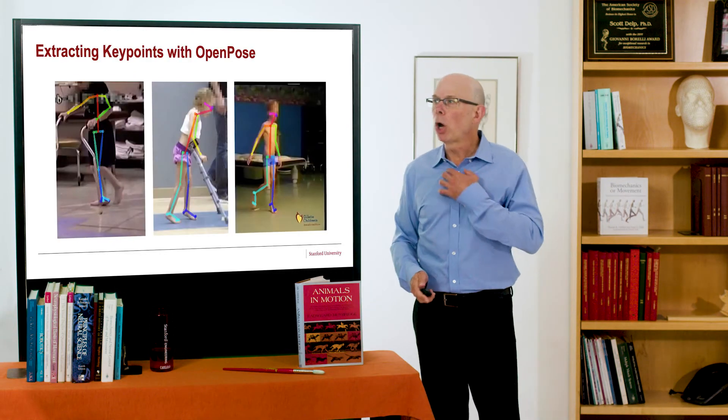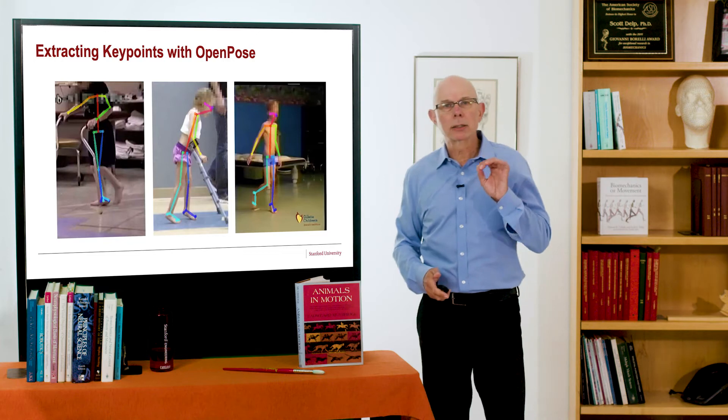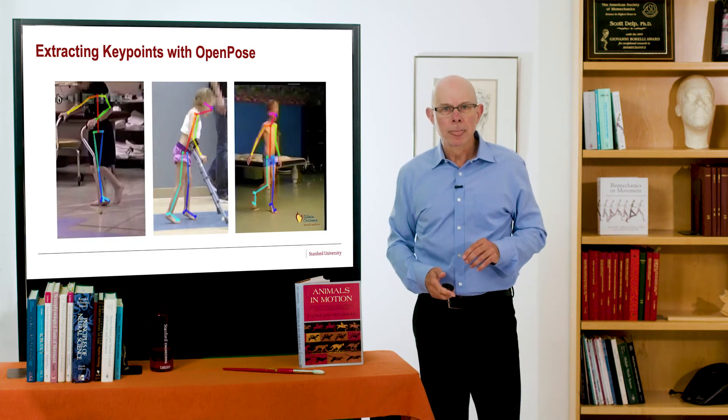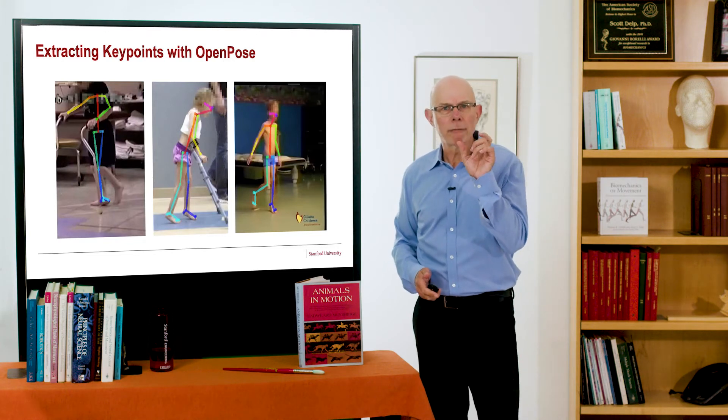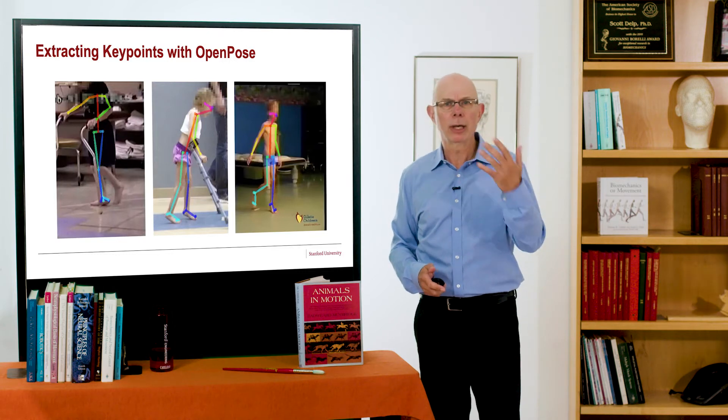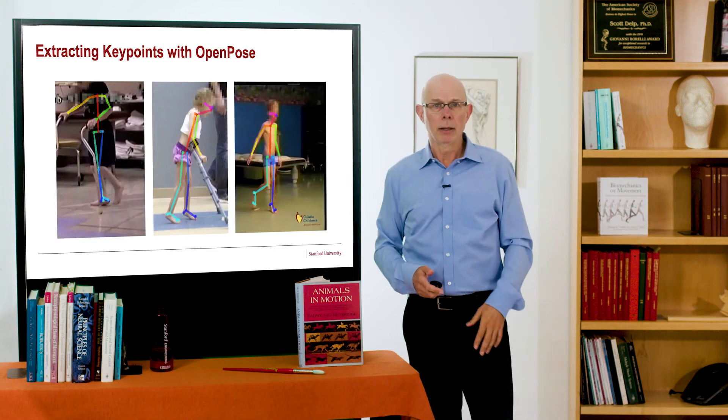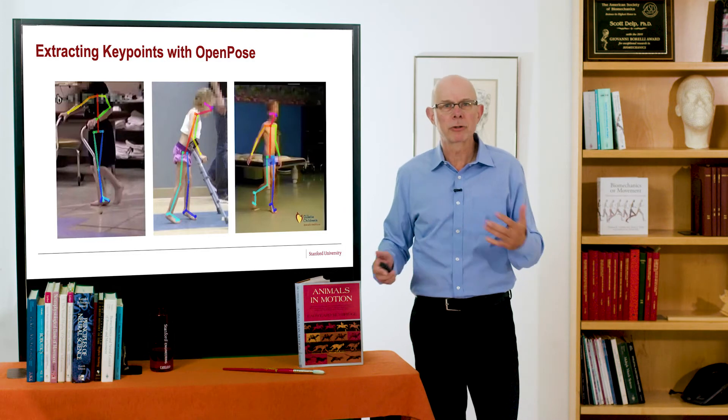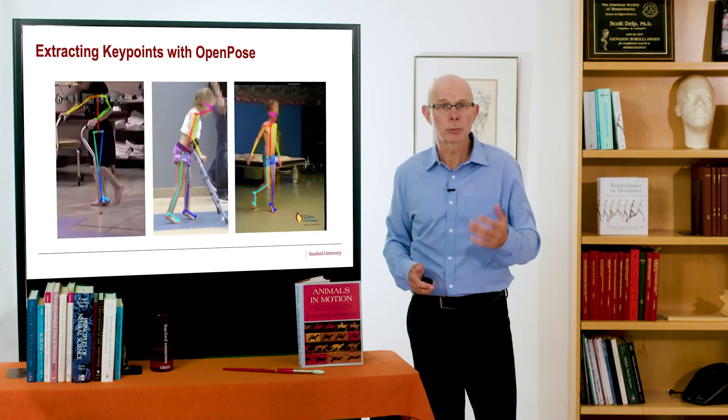Now we used OpenPose to extract key points. OpenPose gives you 25 key points from the video. Things like the center of the ankle, center of the hip, center of the knee, of the wrist, for both left and right sides. And as you can see, it works pretty well.